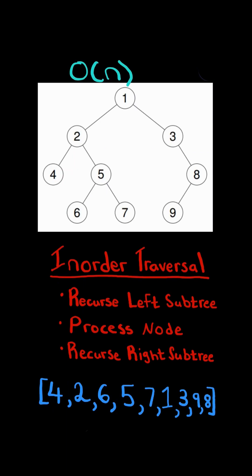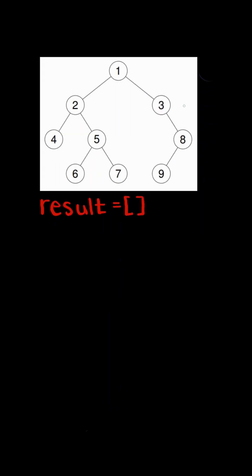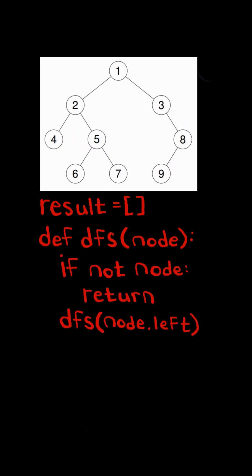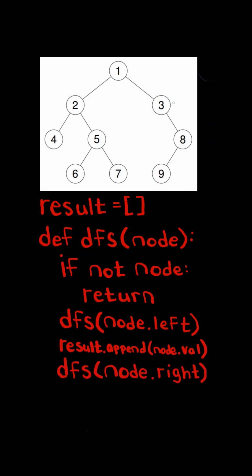We will solve this in O(n) time. First, we initialize a result array, and create a helper function to recurse on. If the node is null, we return. Otherwise, we recurse on the left subtree, we then process the node by appending its value to the list, and finally recurse on the right subtree. And that's the whole algorithm.